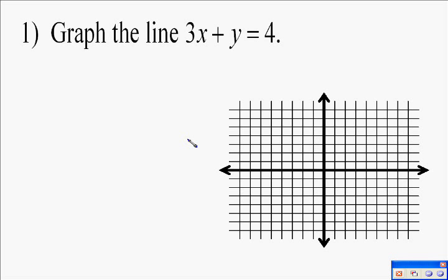The following video asks us to graph the line 3x plus y equals 4. To do this, we're going to use slope intercept form of a line, which is y equals mx plus b.